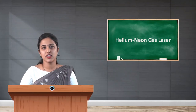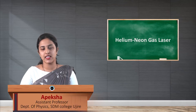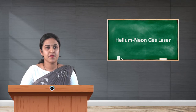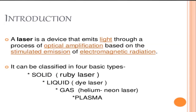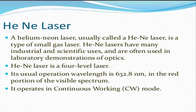Hello students, welcome to this session. We are going to study about helium neon gas laser from Unit 1: Optics, Paper Third. A laser is a device that emits light through a process of optical amplification based on the stimulated emission of electromagnetic radiation. Lasers can be classified into four basic types: solid, liquid, gas, and plasma.